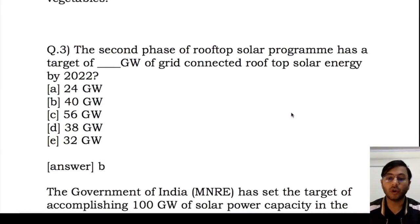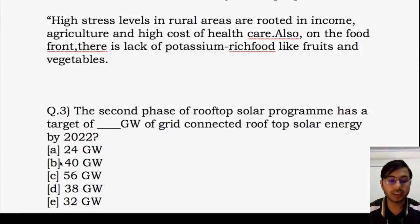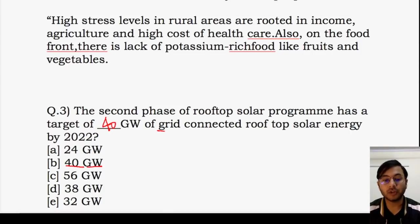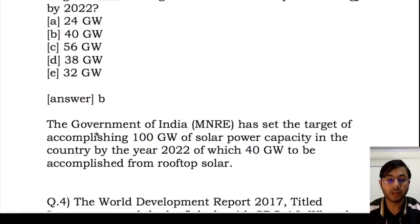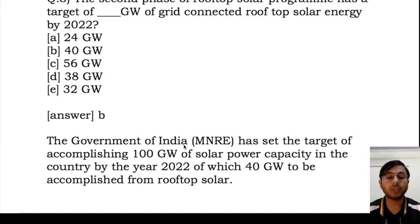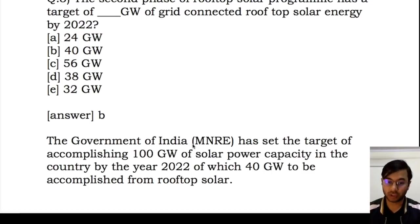Third question — another direct question. The second phase of the rooftop solar program has a target of how many gigawatts of grid-connected rooftop solar energy by 2022? The answer is 40 gigawatts. The main target is 100 gigawatts of total solar capacity by 2022, out of which 40 gigawatts is supposed to be grid-connected rooftop solar energy. Remember: total solar target is 100 GW, rooftop solar is 40 GW.